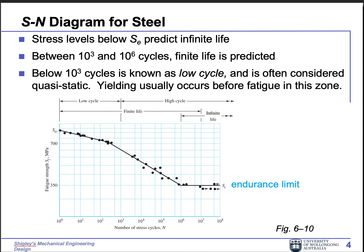Let's look at the SN diagram. This is an SN diagram for steel — mild steel or different steels. Normally the curve flattens at a point called the endurance limit. So after a million cycles, if the component can sustain a million cycles, then it can go forever — it never breaks. This is a very good property for steel, so you only have to test up to a million times.